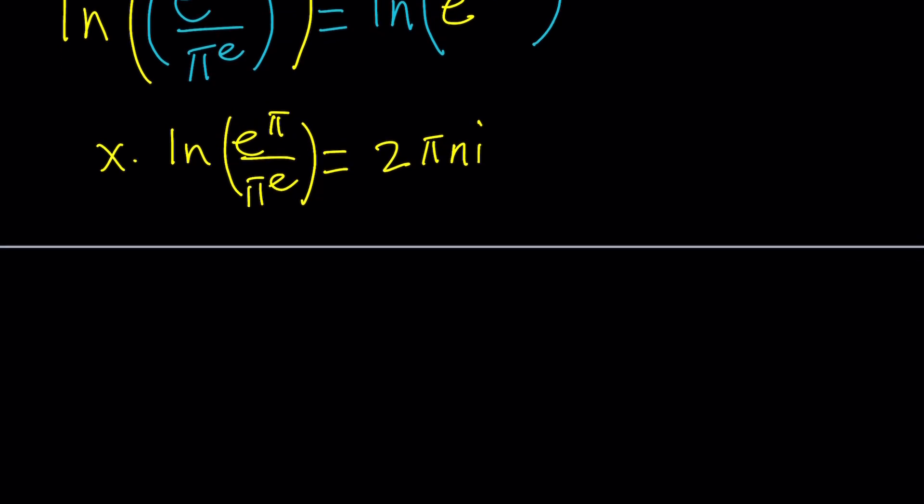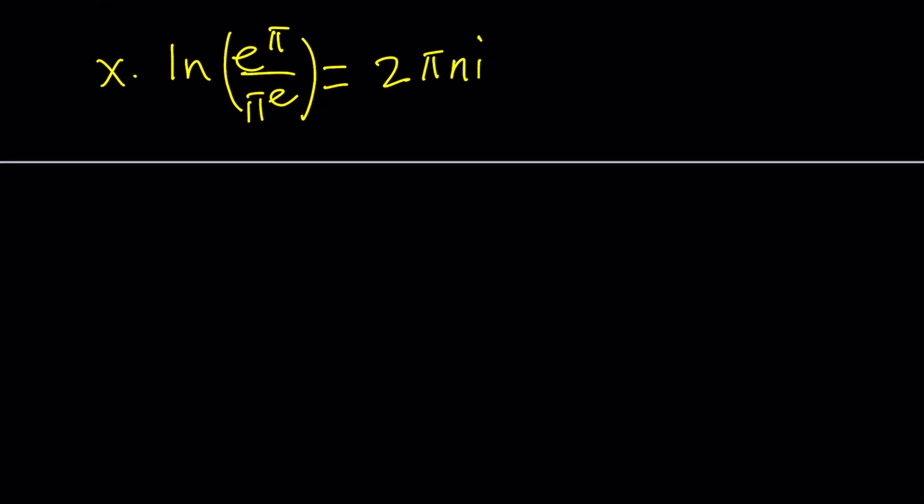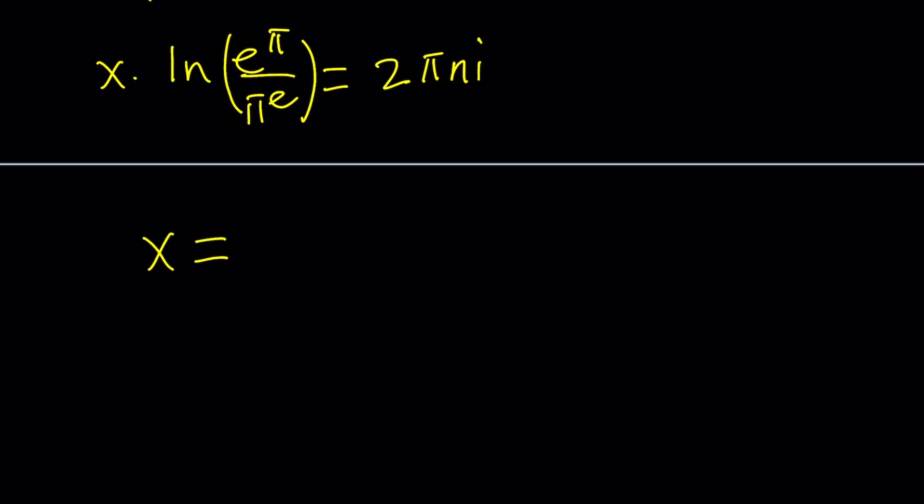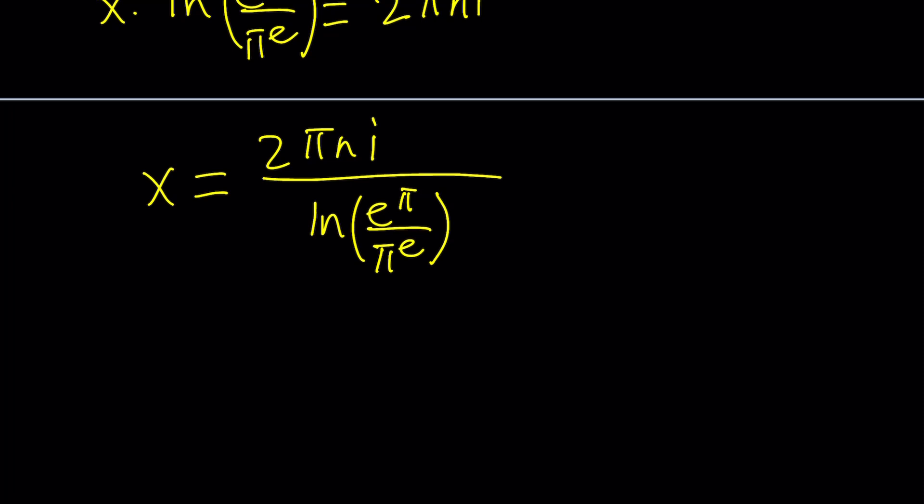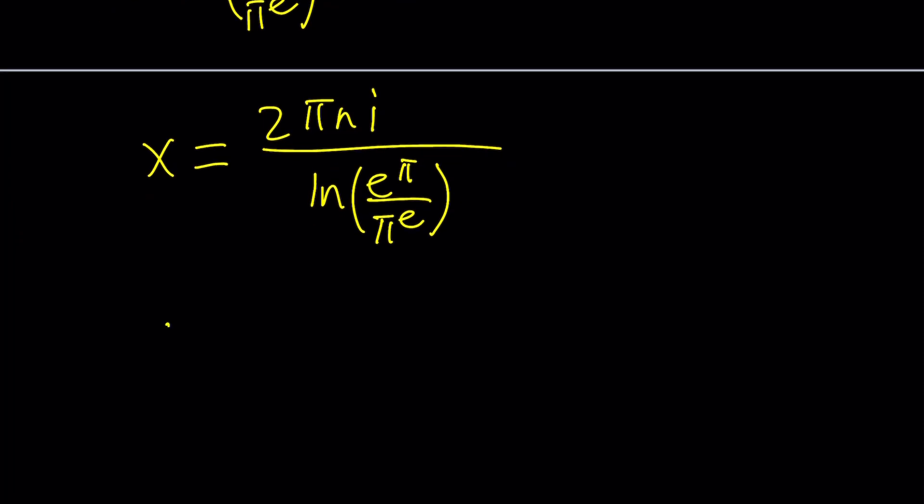Now, we're trying to solve for x. Therefore, we're just going to divide both sides by ln e to the pi over pi to the e. And that's going to give us the following. X equals 2 pi n i divided by ln e to the pi over pi to the e. Obviously, we can make a little bit of modifications or expand this a little bit and write it as follows. This is the log of a quotient. So, we can write it as the difference of two logs.